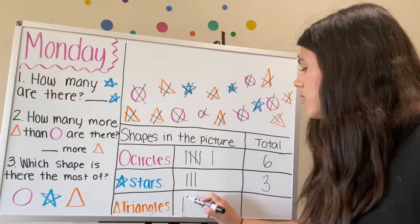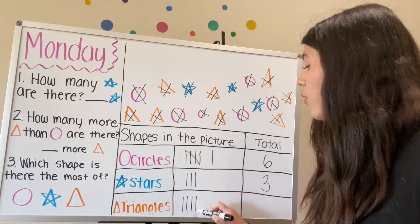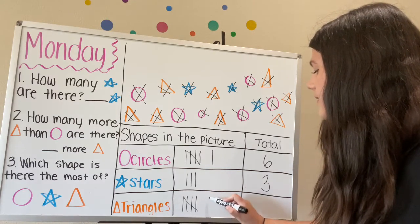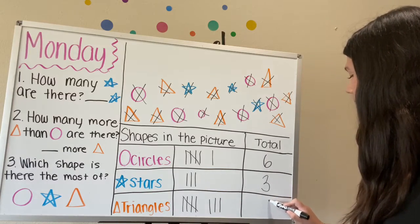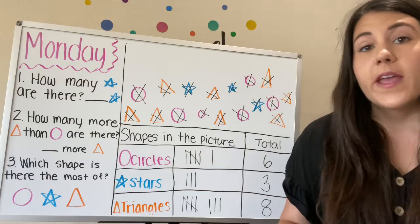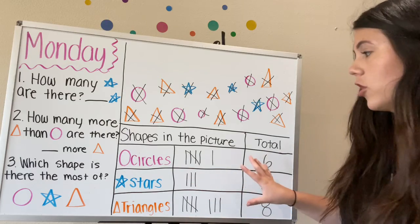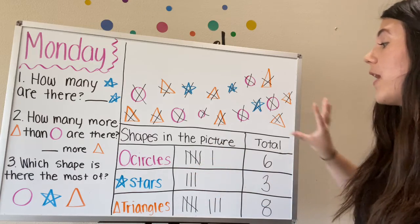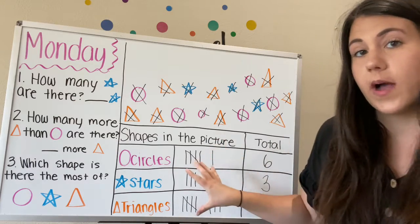Whoa. One, two, three, four, and cross it. Five, six, seven, eight. Eight total triangles. So we have filled out our whole entire tally chart. We filled out how many shapes are in the picture, and then we wrote the actual number to represent our tally marks as well.